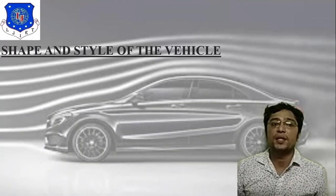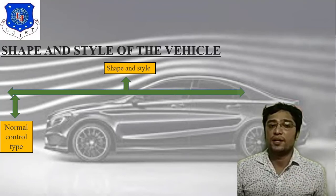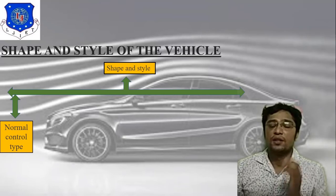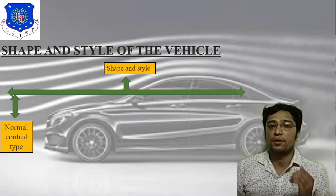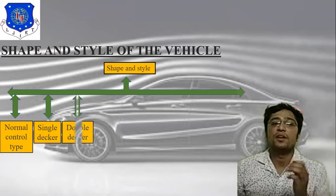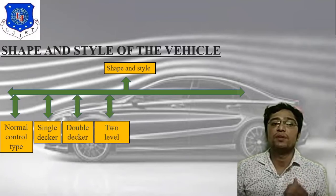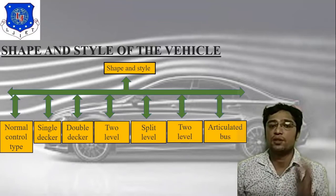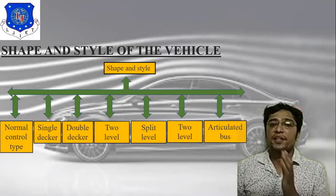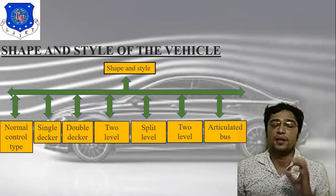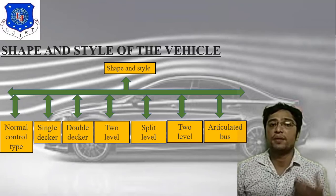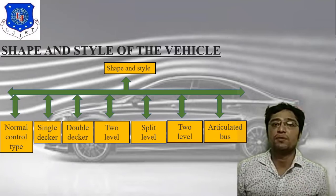The next classification is based on shape and style of the vehicle. The categories are: first, normal control type; second, single deck; third, double deck; fourth, two level; fifth, split level; sixth and seventh, two level variants; and finally articulated buses. This is the main classification of bus bodies by shape and style.